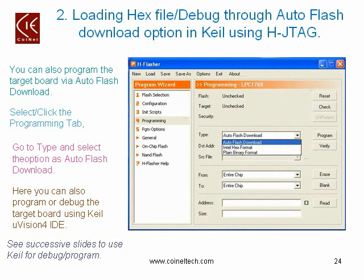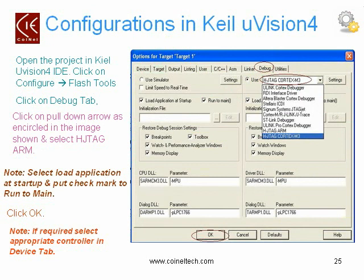Now for the second option — downloading code using the Auto Flash Download option. Click the pull-down arrow again, which shows a menu with Auto Flash Download, Intel Hex Format, and Plain Binary Format. Select Auto Flash Download. Here you can also program or debug the target board using Keil Microvision 4 IDE. The following slides will show Keil Microvision 4 for debugging or programming mode. After selecting Auto Flash Download in Edge Flasher, minimize that window and go to your Keil Microvision 4 IDE, then open your LED Toggle project.